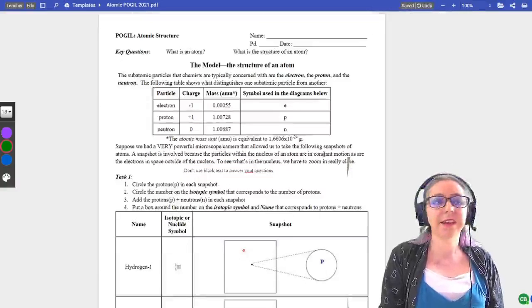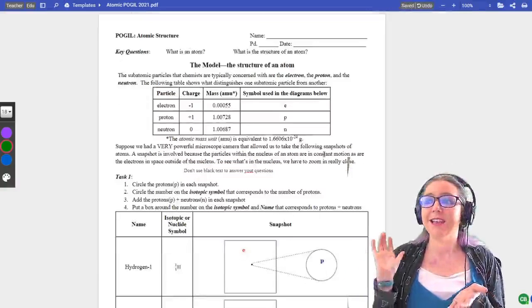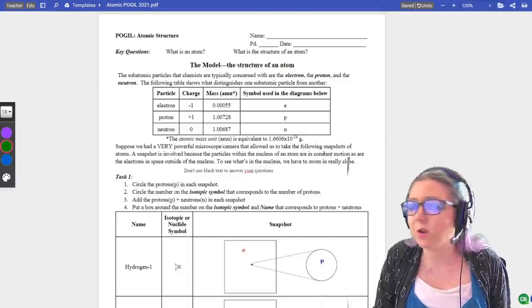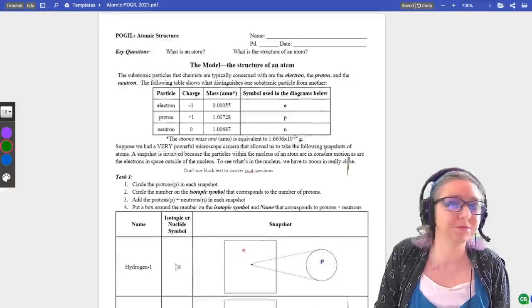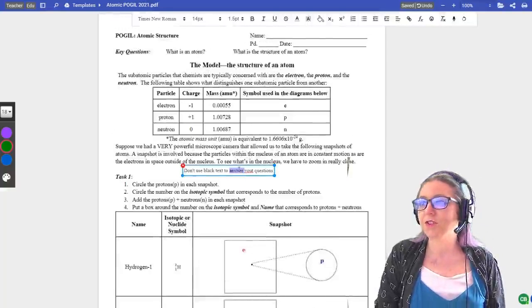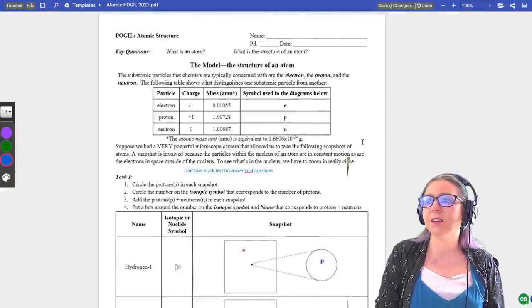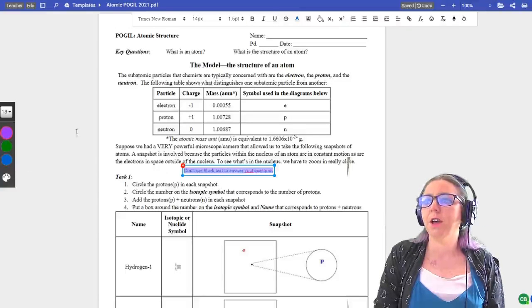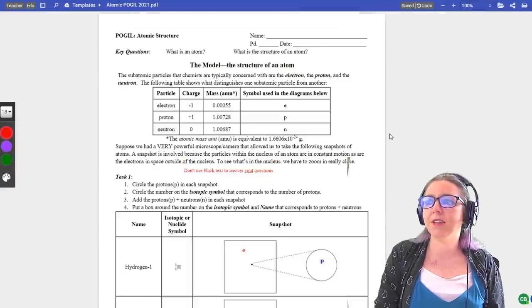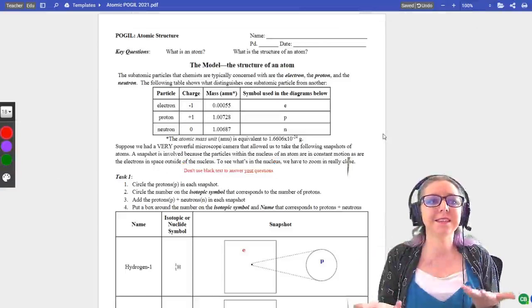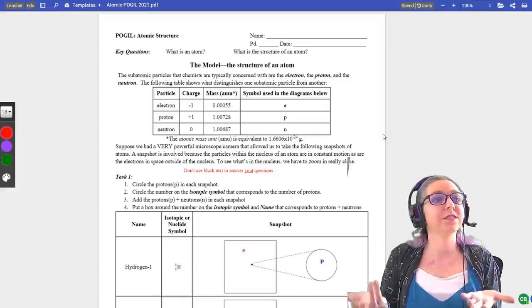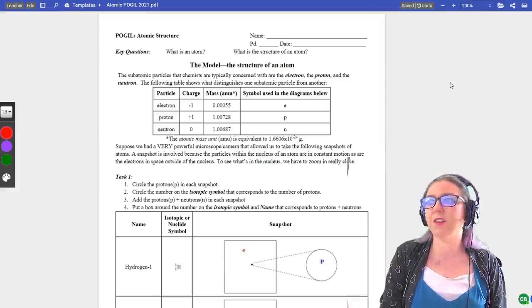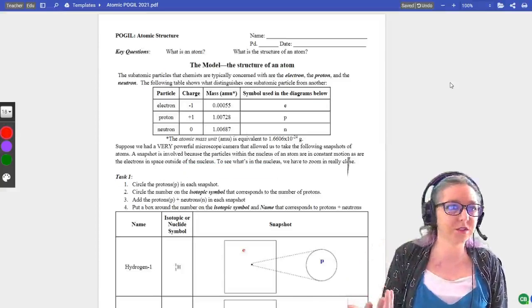When you use black text to answer your questions, it's kind of hard for us teachers to see, wait, oh, it looks like they didn't answer that question. Okay, I guess I'll take off a point. But if you use color like blue or maybe purple or maybe red, then we can easily see, oh, our students did answer all the questions. So please don't use black text. It makes it very hard for us to see that you did answer your questions.